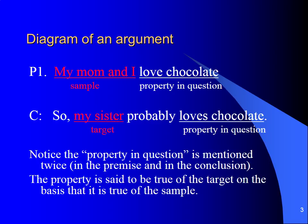Now we know exactly where to find the components of an inductive argument. The sample is always found in the premise. The target is always found in the conclusion. And the property or feature in question is usually found in both the premise and the conclusion.